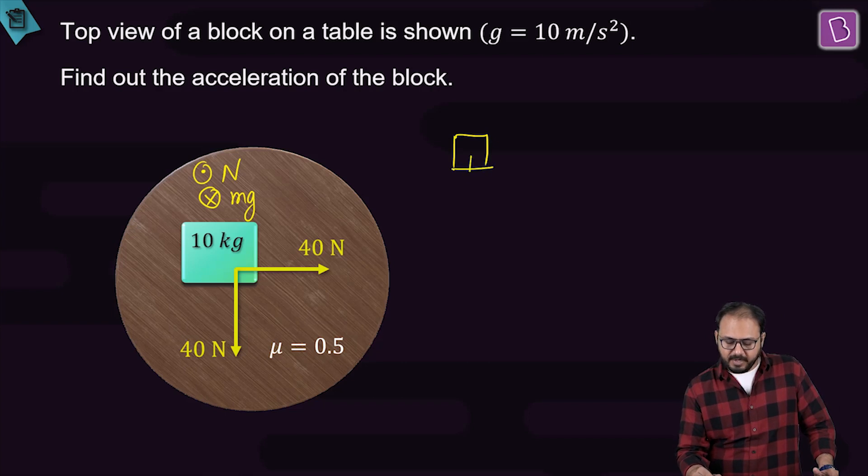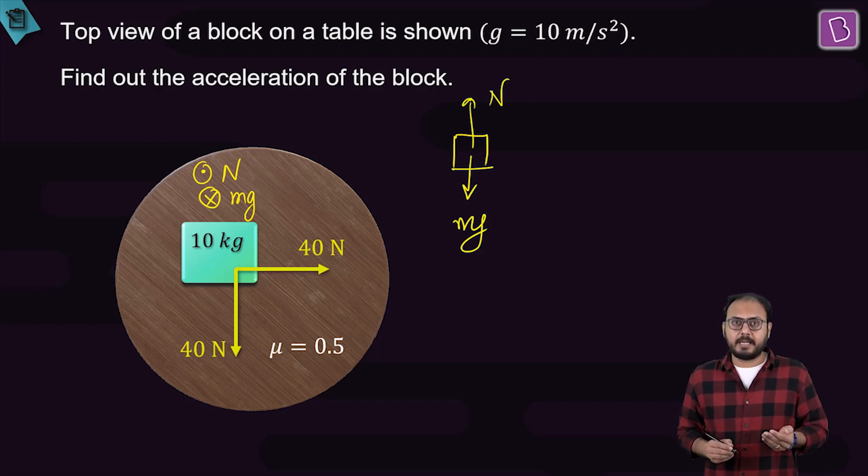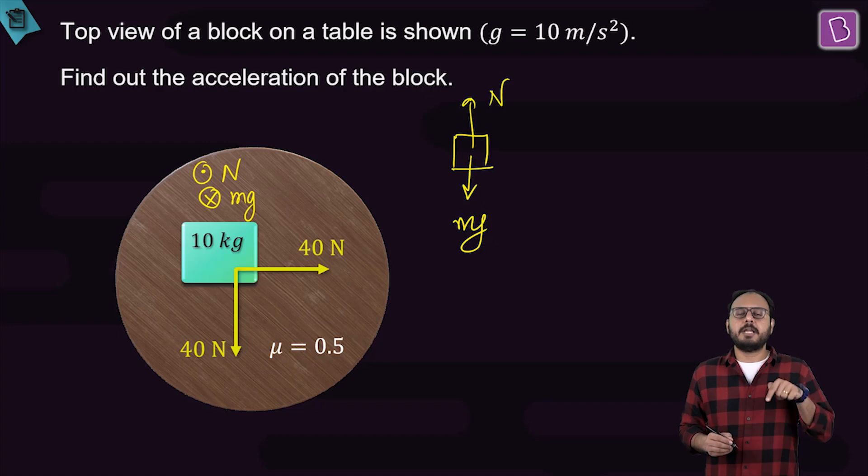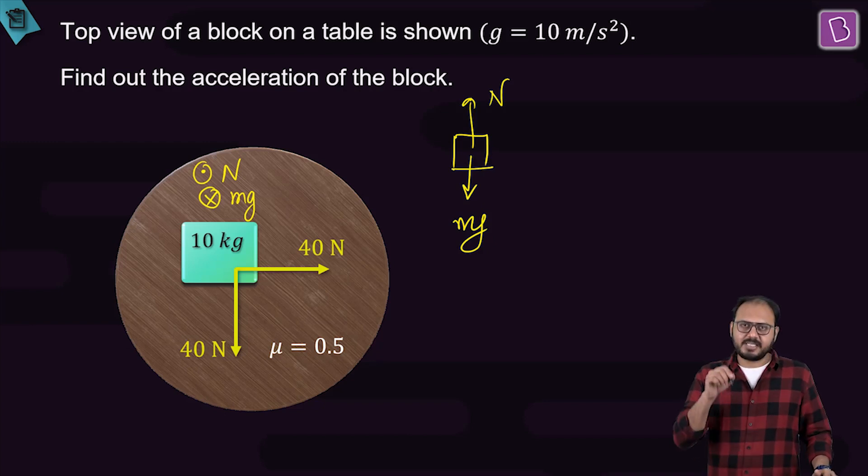If I had been looking at this block from the front view, I would have said mg down and normal up. But if you look at it from the top, mg is going into the table. Into the table, into the paper, into the plane is a cross. Coming out is a dot because they follow arrow notation. When an arrow goes away from you, it looks like a cross—the last part of the arrow. When something is coming towards you, it's the pointy side, the dot. So mg is into the table, normal is coming up from the table, so N equals mg.